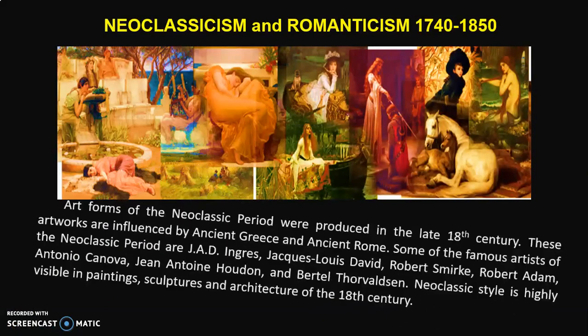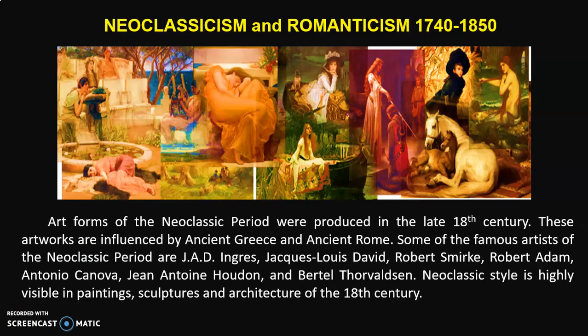Neoclassicism and Romanticism from 1740 to 1850. Art forms of the Neoclassic period were produced in the late 18th century. These artworks are influenced by Ancient Greece and Ancient Rome. Some of the famous artists of the Neoclassic period are J.A.D. Ingres, Jacques-Louis David, Robert Smirke, Robert Adam, and Antonio Canova.